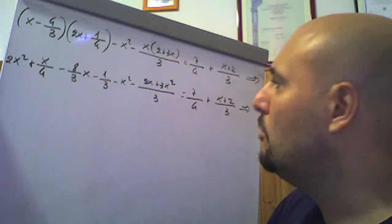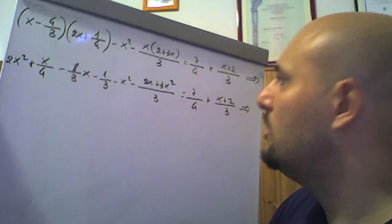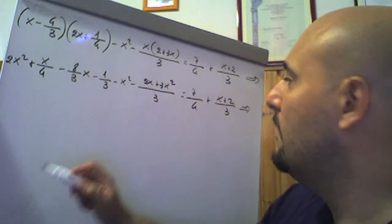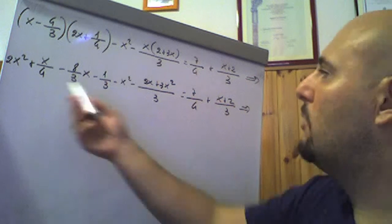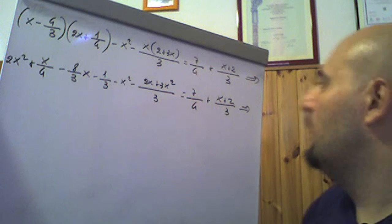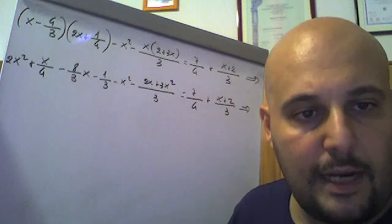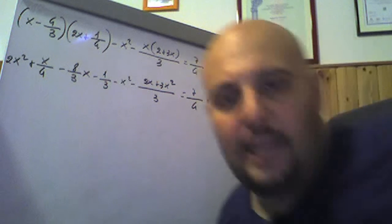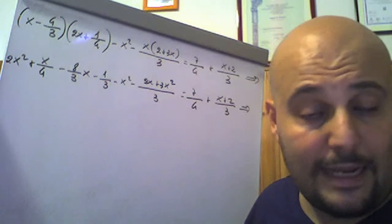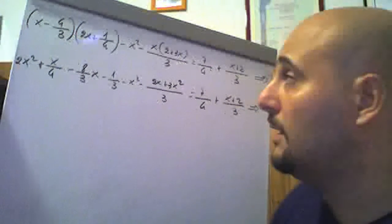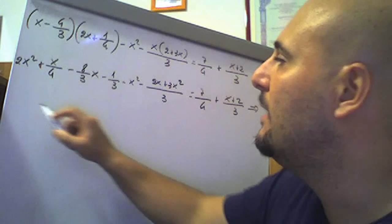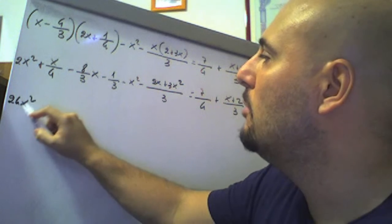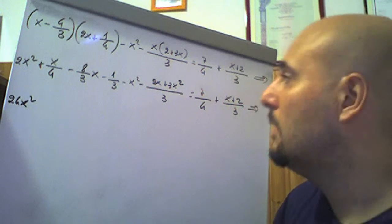Partiamo col minimo comune multiplo. Abbiamo denominatori 4, 3, 3, 3, 4, 3. Poiché 4 è 2² e 3 è primo, il minimo comune multiplo è 12. 12 diviso 1 per 2x² fa 24x². In questo modo mandiamo via subito i denominatori.